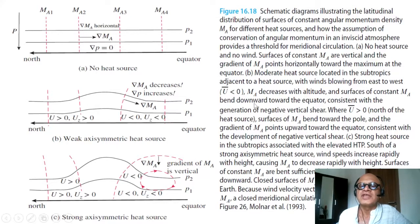For moderate heat source located in the subtropics adjacent to a heat source with winds blowing from east to west, so u̅ is less than 0, Ma decreases with altitude and surfaces of constant Ma bend downwards towards the equator.